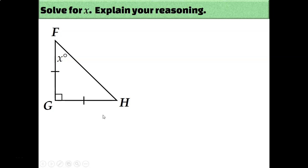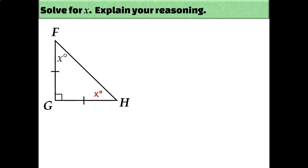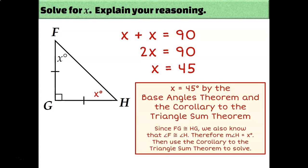The next problem might feel impossible since no numbers are given, but the small square indicates a right angle of 90°. Since two sides are marked as congruent, this is an isosceles triangle and the base angles must be congruent — both equal x°. Using the corollary to the triangle sum theorem, the two acute angles in a right triangle sum to 90°: x + x = 90, so 2x = 90, therefore x = 45. The reasons are the base angles theorem and the corollary to the triangle sum theorem.